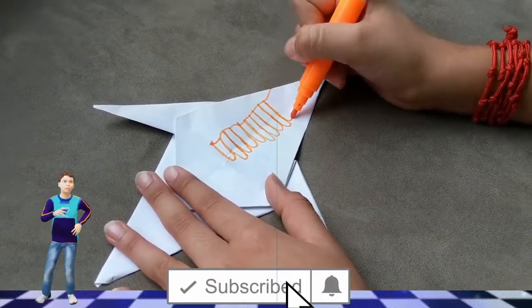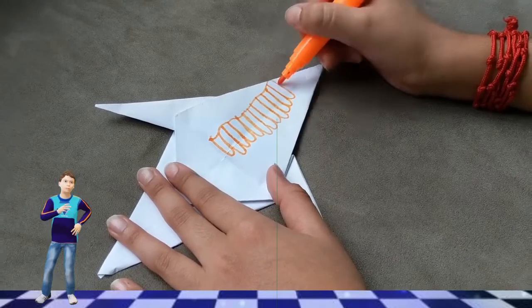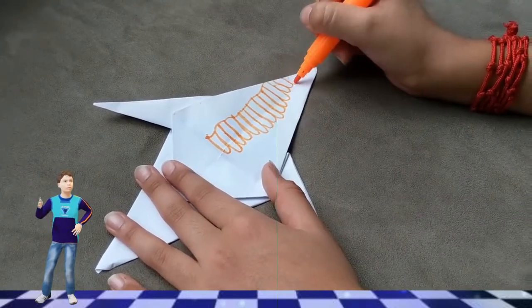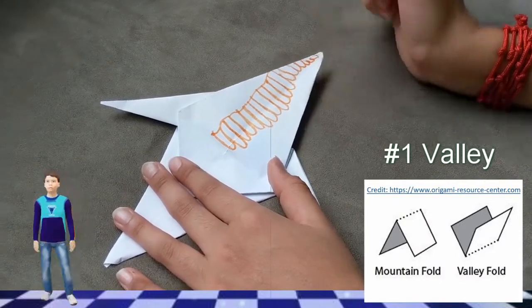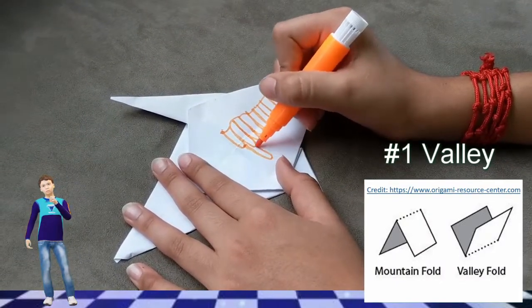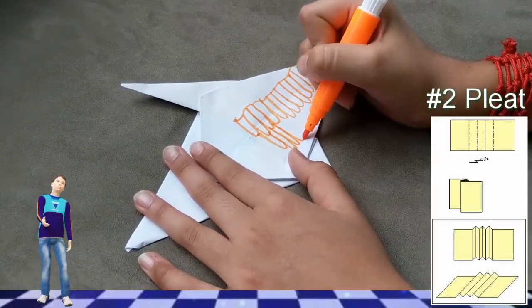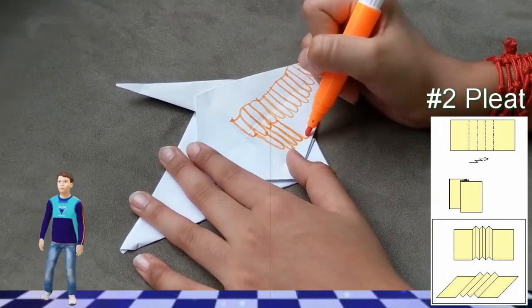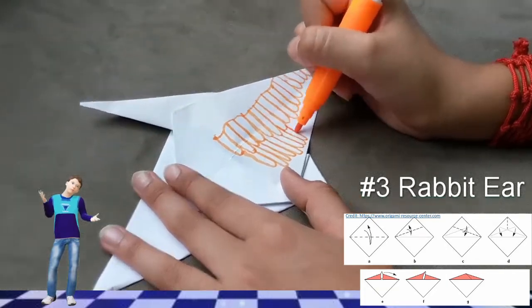Please click the subscribe button and say your valuable comments below for us to entertain you better. There are nine basic origami folds. The valley or mountain. The plate. The rabbit ear.